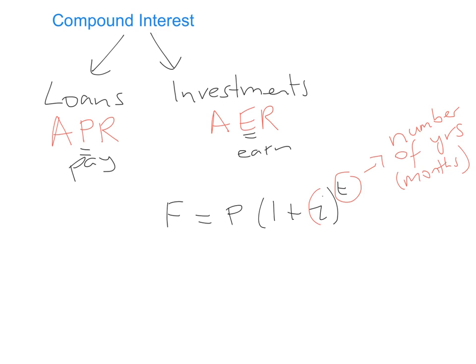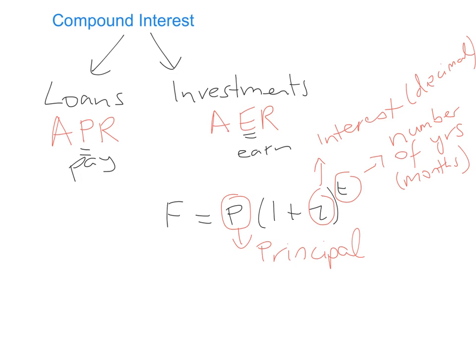I is the interest rate, and you need to make sure that it's written as a decimal. P stands for the principal, which can be a bit confusing — it basically means the original amount that you've either borrowed or invested. F is the final amount: the total amount you owe to the bank on a loan, or the total amount you receive from your investment at the end.